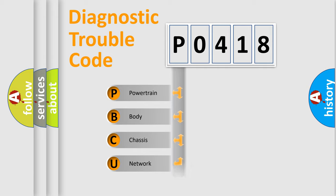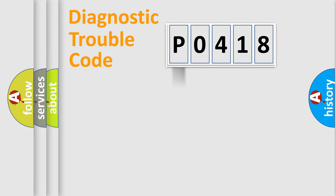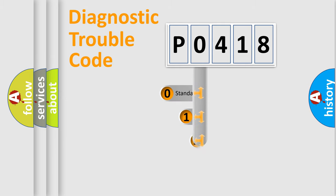We divide the electric system of the automobile into four basic units: Powertrain, Body, Chassis, and Network. This distribution is defined in the first character of the code.